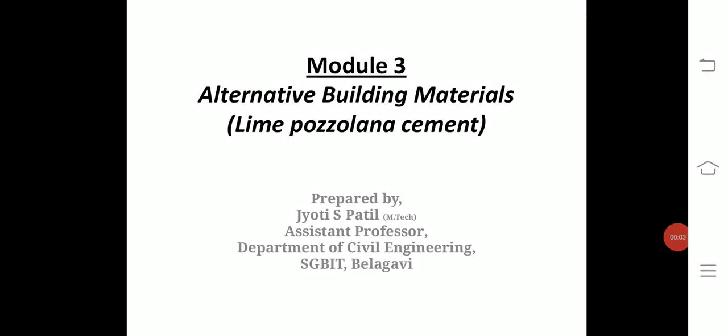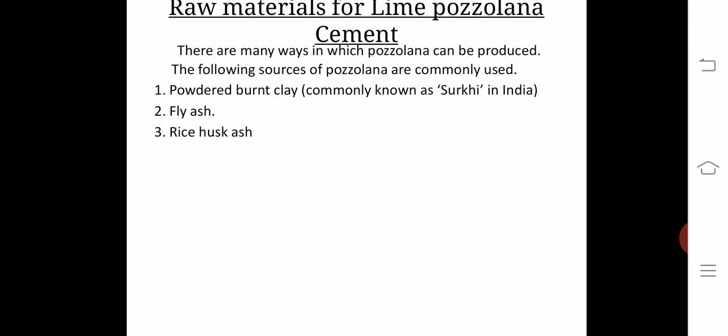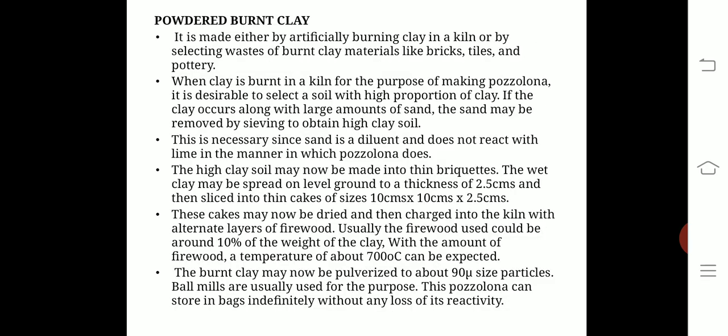Today is the continuation of yesterday's class on introduction and component parts of lime pozzolano cement. Today we'll be proceeding with the process of manufacturing, its characteristics, and raw materials. There are many ways in which pozzolano can be produced. The commonly used sources are powdered burnt clay, fly ash, and rice husk ash. Today we'll be studying these components in detail.